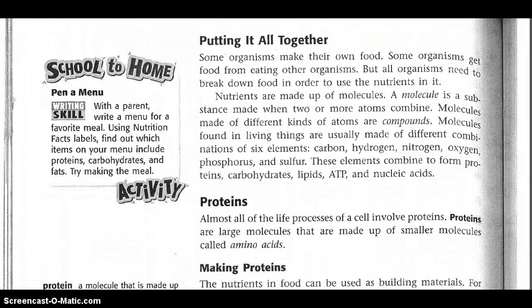All organisms need to break down food in order to use the nutrients in it. Nutrients are made up of molecules. A molecule is a substance made when two or more atoms combine. Molecules made of different kinds of atoms are compounds. Molecules found in living things are usually made of different combinations of six elements: carbon, hydrogen, nitrogen, oxygen, phosphorus, and sulfur. These elements combine to form proteins, carbohydrates, lipids, ATP, and nucleic acids.